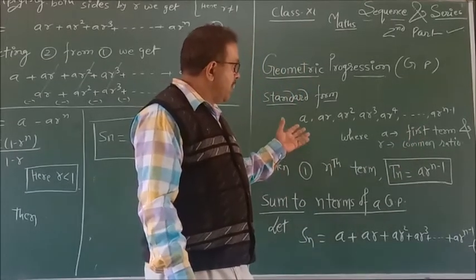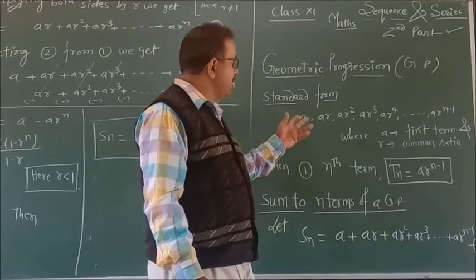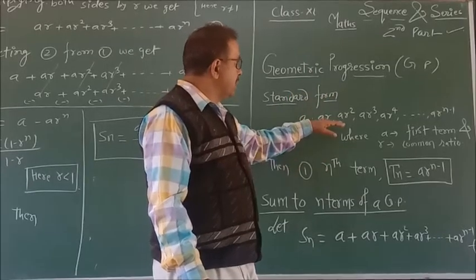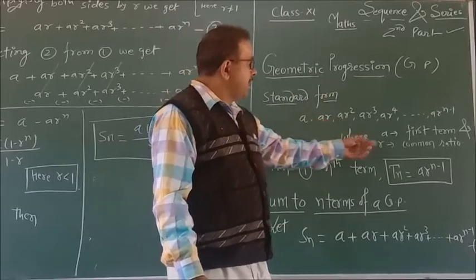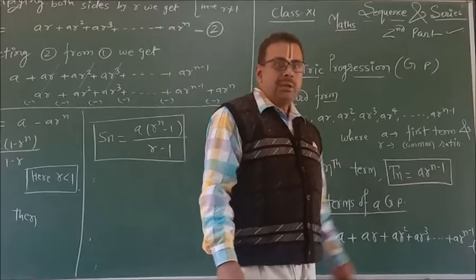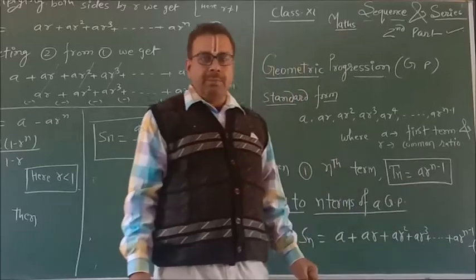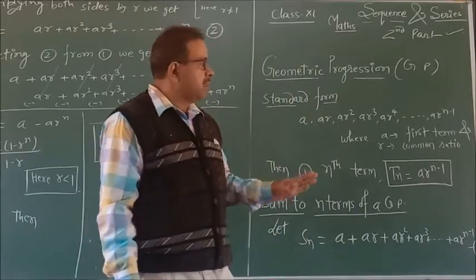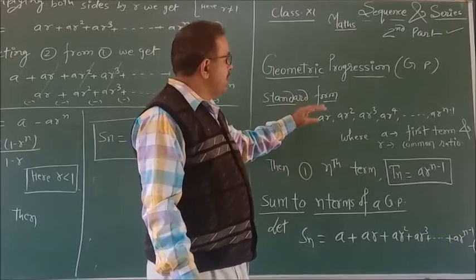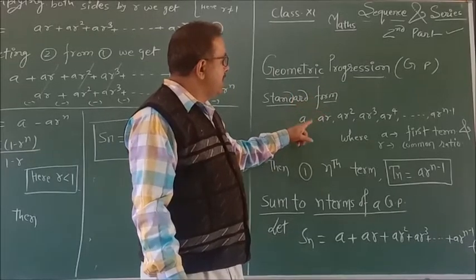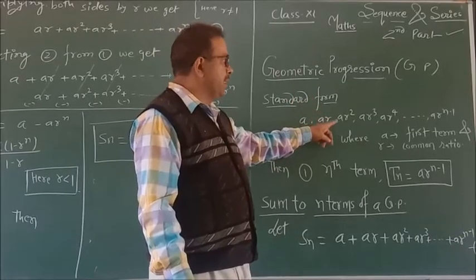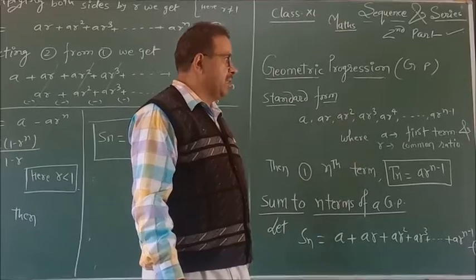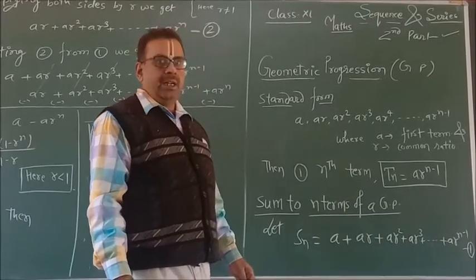You will see the difference between arithmetic progression and geometric progression. In GP, r is the common ratio, while in AP, d is the common difference.